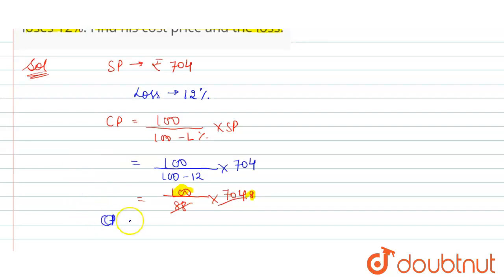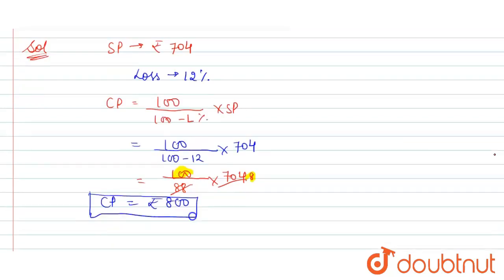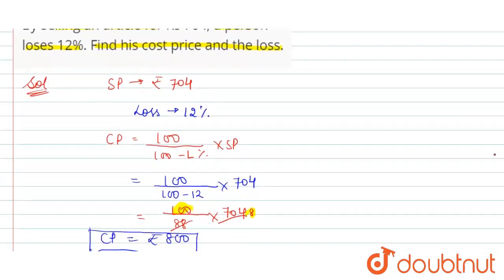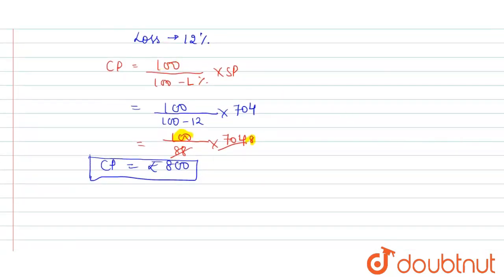Now we have to find loss also. So formula of loss is CP minus SP is equals to loss. So CP we find, that is rupees 800, and SP is given in the question, that is rupees 704.